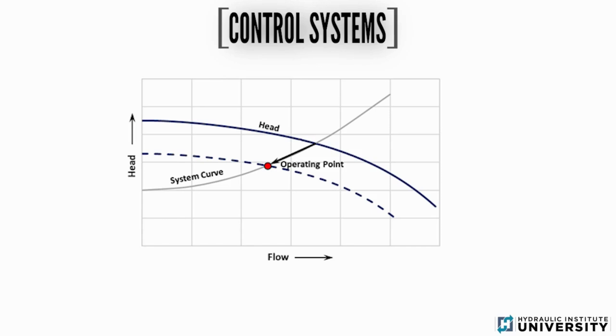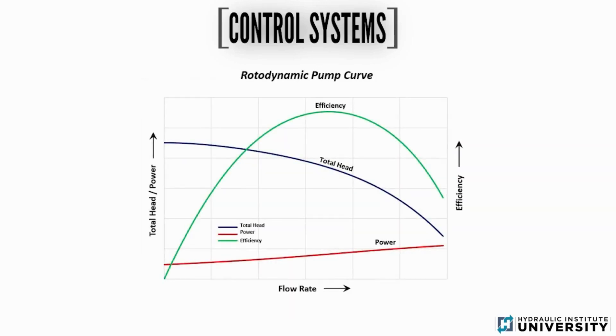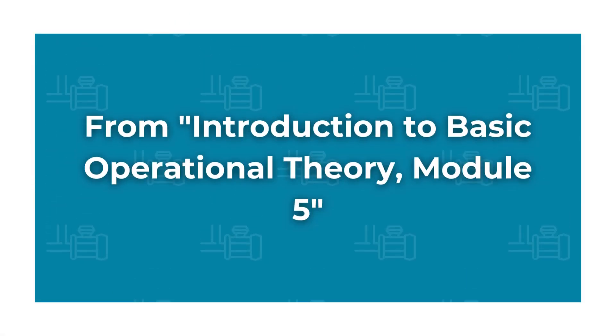As speed is reduced, the operating point shifts down the system curve. The introduction to basic operating theory training module will cover the different shapes of these curves.